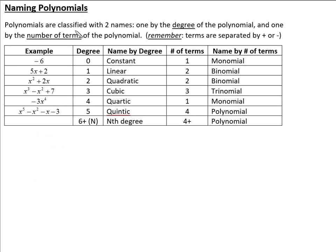So polynomials — when we classify them, we give them two names. One is by degree, which is the highest power of x or a variable. The other is based on the number of terms. Remember, terms are separated by addition or subtraction.